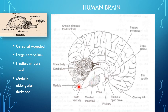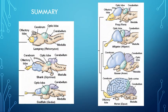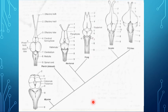The medulla oblongata is a thickened structure, and the choroid plexus of the third ventricle is also present. To summarize, this lecture series has covered the brain structures of different classes of vertebrates, starting from cyclostomes, cartilaginous fishes, bony fishes, amphibians, reptiles, aves, and mammals.